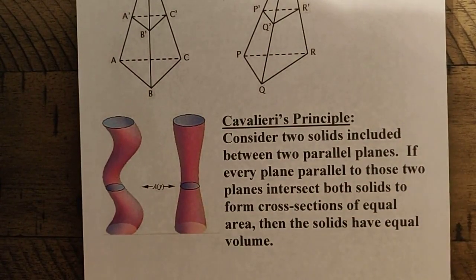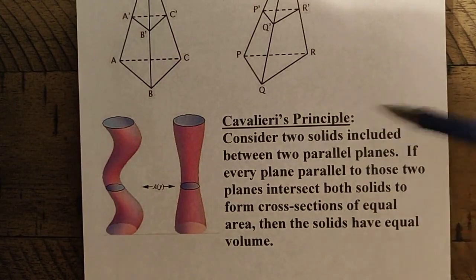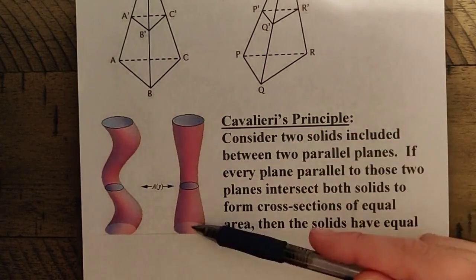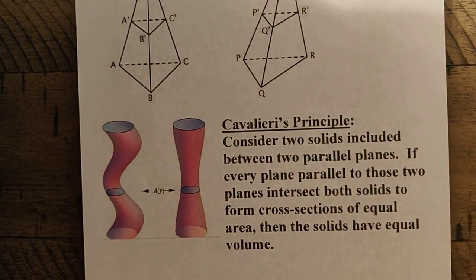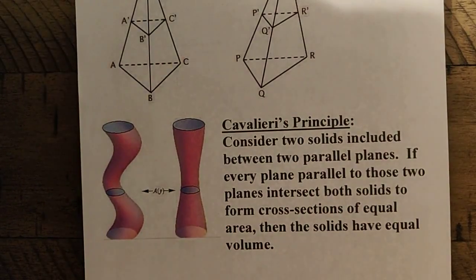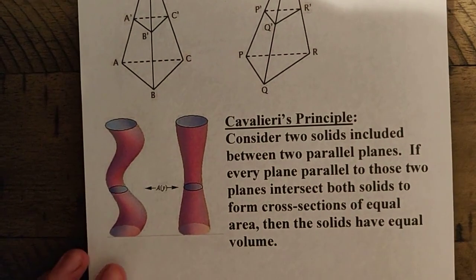So as you can see here, according to the lecture notes, you can consider two solids included between two parallel planes like this here, right? The parallel planes ensure that the two solids are the same height. If every plane parallel to those two planes intersect, both solids will form cross-sections of equal area than the solids of equal volume here.